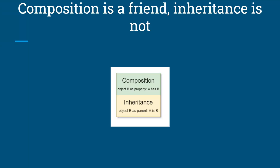Unlike the real world, inheritance in programming is a complicated and even malevolent thing — or maybe just like in the real world. There are two main ways an object can interact with another object: it can have the other object as a property, which is called composition, or it can inherit the other object, which is called inheritance.